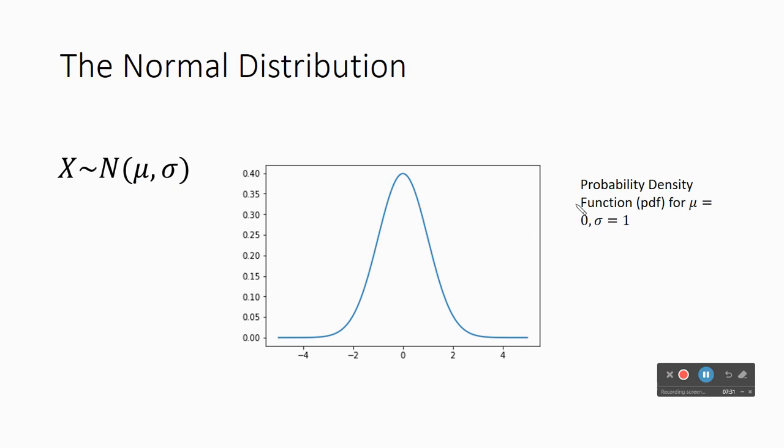This right here, I have the probability density function for my normal distribution for the particular value, mu equals zero, and sigma equals one. And so you have this beautiful bell-shaped curve. You may very well have heard of the bell curve before. And so this is it. When we say the bell curve, we're talking about the normal distribution.